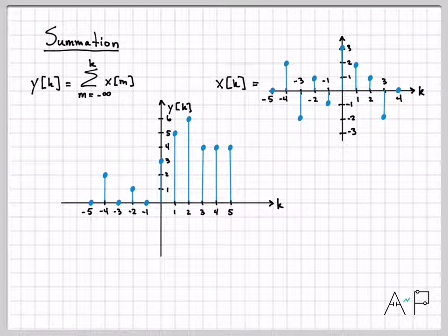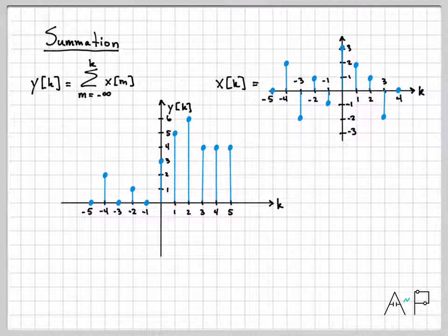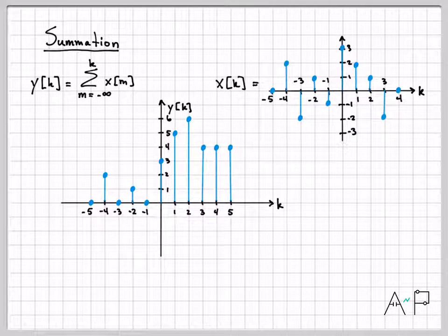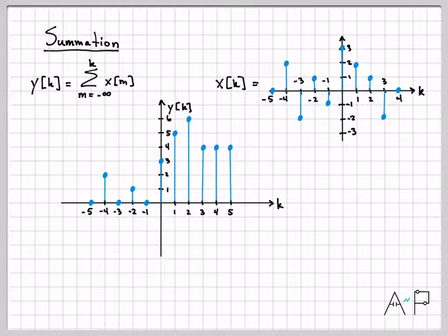In terms of what type of operation this is, we can see graphically that the original signal was bouncing around, but after summation the output doesn't wiggle around nearly as much. Each point is influenced by all the values that came before it, so you can only deviate a little from the running sum. Whereas differencing is a high-pass operation that lets noisy things through and rejects low-frequency terms, summation is a low-pass operation — it tends to result in smooth outputs, rejects drastic changes, and smooths out discrete jumps or blips. So summation and integration are inherently low-pass filtering operations.